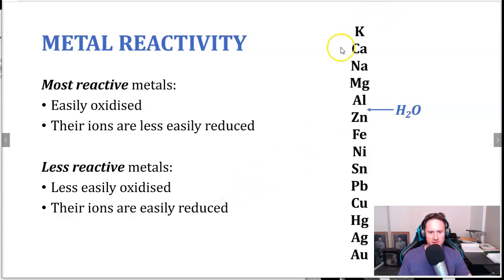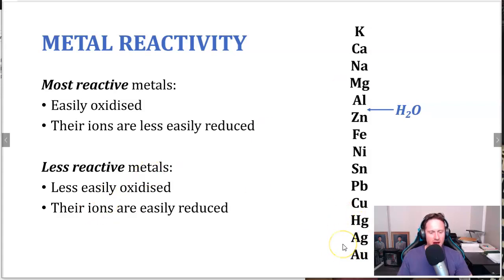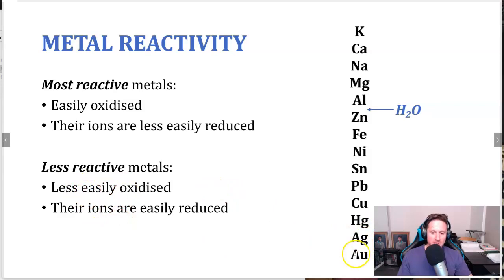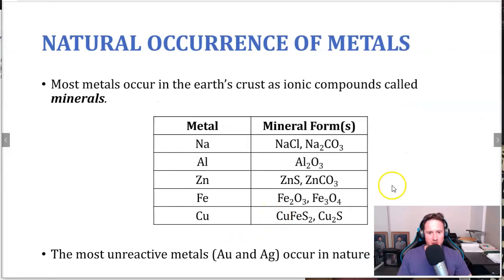The most reactive metals at the top are the most easily oxidized and their ions are less easily reduced. Oxidation is the loss of electrons, so if something is easily oxidized, it's hard to reduce — those are opposite situations. The less reactive metals at the bottom are the opposite: less easily oxidized, and their ions are easily reduced. So turning from the metal to metal ions is not easy, but turning those ions back into the metal is easy.